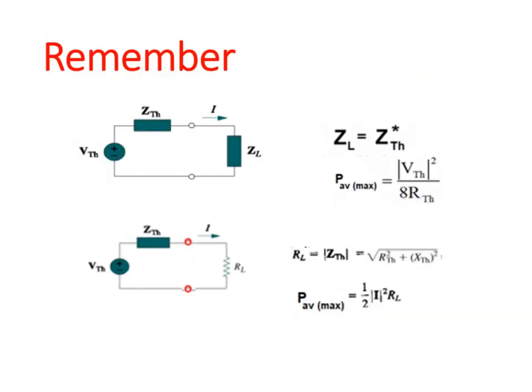At the end, you must remember: if the load has impedance form, then for maximum power, Z_L should equal Z_Thevenin conjugate, and maximum average power is V_Thevenin squared divided by 8R_Thevenin. But if the load is resistive, then R_L equals the magnitude of Z_Thevenin, and maximum average power is one-half I squared R_L. I hope this gives you some idea about maximum power transfer. Thank you.